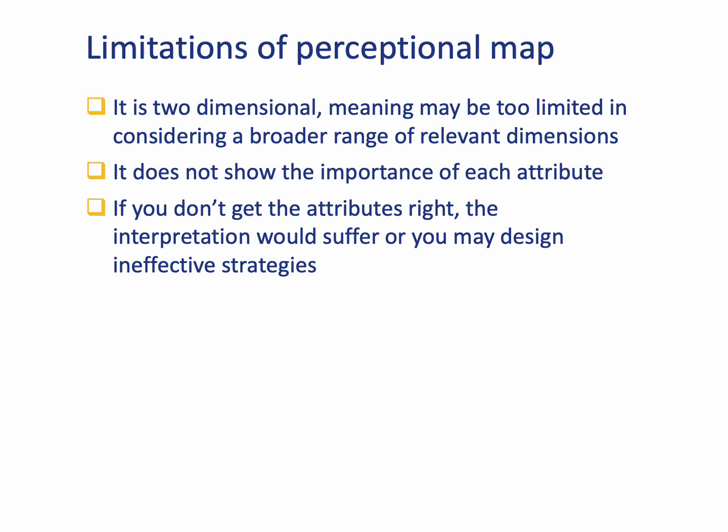Finally, if you don't get the attributes right — which is the trickiest and hardest part of Perceptual Map — then the interpretation will suffer, or you may simply design ineffective strategies based on wrong assumptions. This can happen when not enough care was taken to find out about the attributes, perhaps we rushed it, didn't engage in proper research — secondary data, primary data, and so forth. Or we simply rely on our own knowledge as managers, which may be completely different to what customers actually think. We as managers can be shocked to discover that people think and behave differently. So it's very important to put yourself in the shoes of the customers.